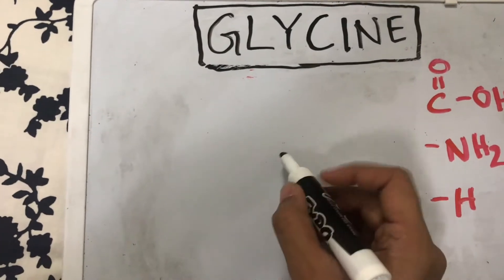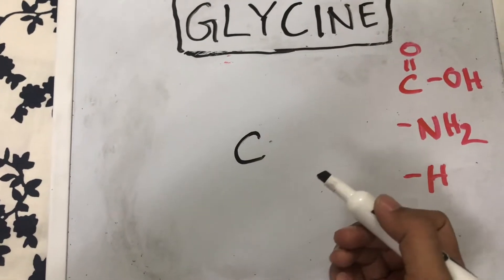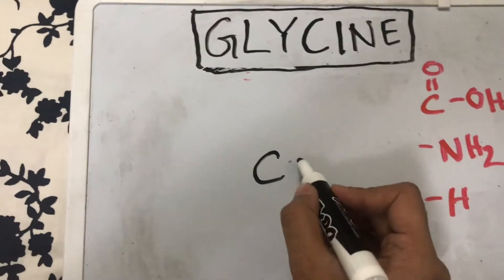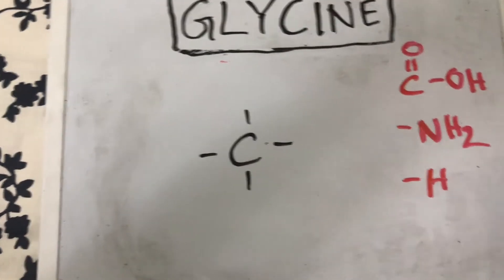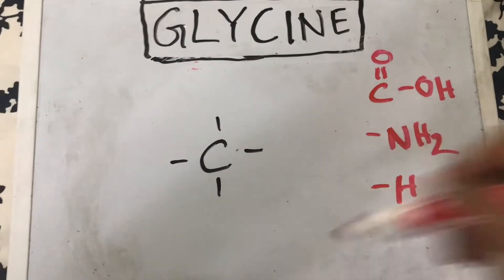You draw your C, and as you know, carbon can form four bonds around it. So you draw four straight lines around the carbon and start placing all the groups around the carbon.